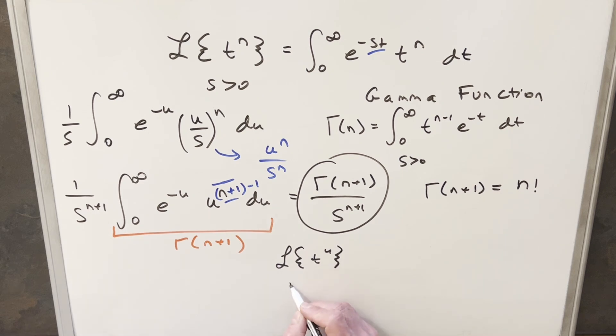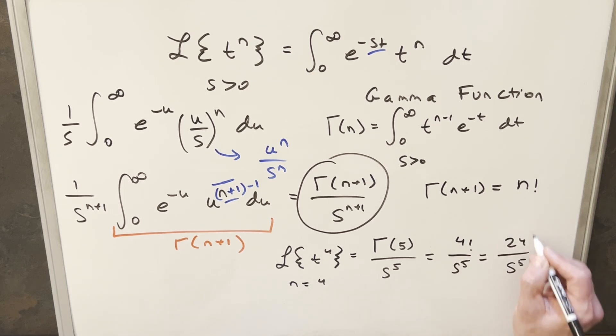So for t to the fourth, our n value is just going to be 4. So we'll just use this formula to start. This is going to be the same thing as gamma of 5 over s to the 5. But then we might want it in this more familiar form so we can put this in terms of the factorial. So gamma of 5 is the same thing as 4 factorial over s to the 5. And then we can multiply this out and we can just write this as 24 over s to the 5.